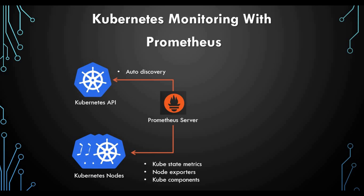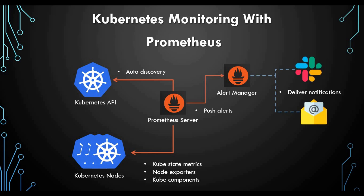Let's talk about what our monitoring solution will look like. Once we run this Helm chart, we'll have a Prometheus server which will contact the Kubernetes API and Kubernetes nodes. It will use auto-discovery, getting kube-state-metrics and Node Exporter data from the nodes, pulling all Kubernetes component metrics into the Prometheus server. We also have Alert Manager where you can push these metrics and send them to components like Slack, email, or PagerDuty for delivering notifications.